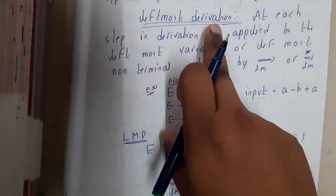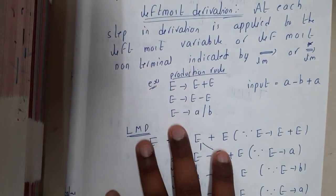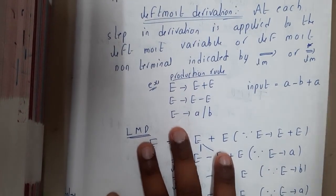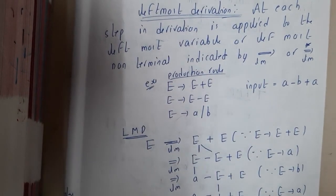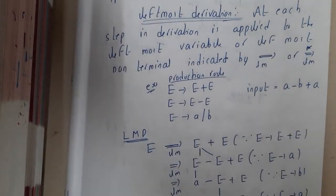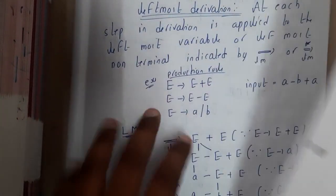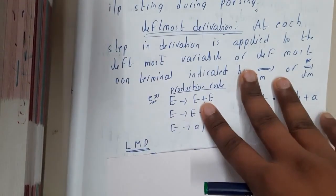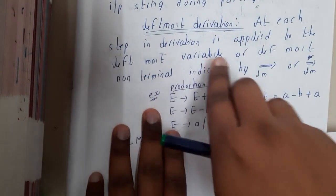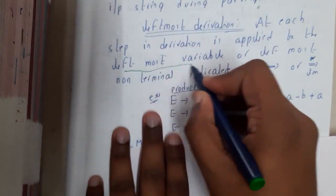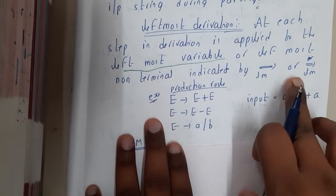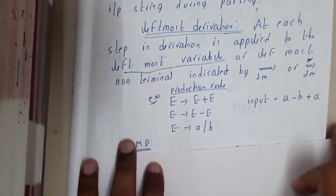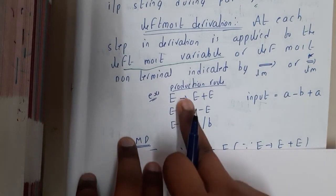So leftmost derivation — from the name you get a hint that you will be expanding in the left direction. Each step in the derivation is applied to the leftmost variable. That is the reason why it is called leftmost derivation. It is indicated with the symbol 'implies LM' or 'implies LM star'. Now observe the grammar — these are the production rules.